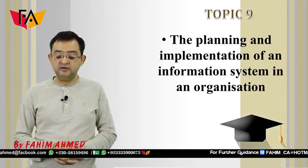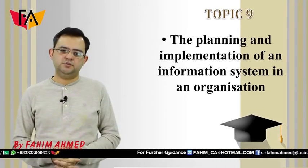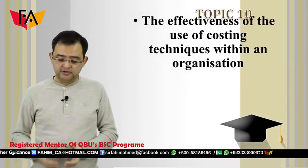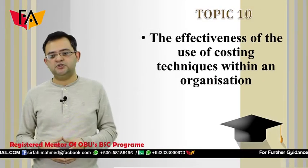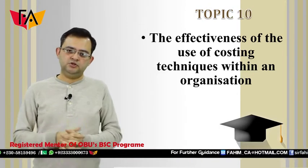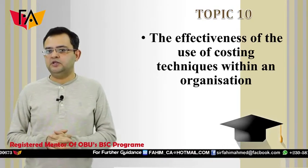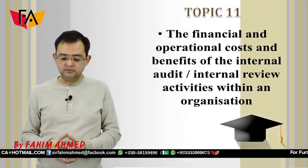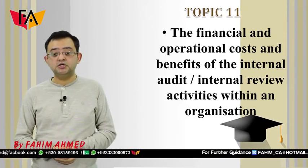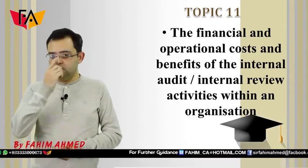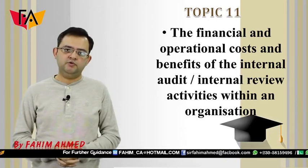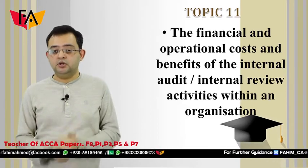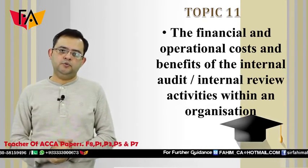Topic 9 is the planning and implementation of an information system in an organization. If you have dealt with this situation in your workplace, you can write a good report on it. Topic 10 is the effectiveness of the use of costing techniques within an organization. For costing information, you need some inside information, so you may need to be working in the organization. Topic 11 is the financial and operational costs and benefits of internal audit or internal review activities within an organization. Many of you working as internal auditors and aware of the costs and benefits of internal audit can select this topic and write a very good report.